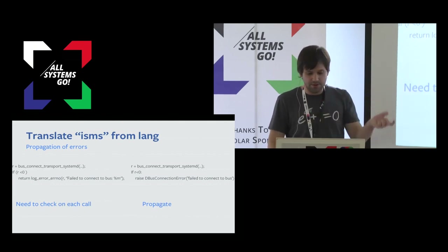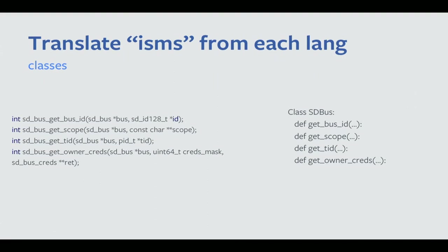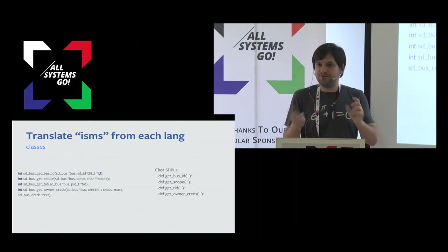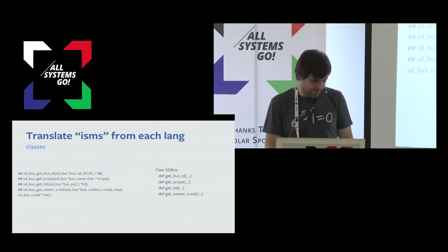You'll notice in my code that I raise a lot instead of checking, and I try-except a lot. The other thing is that systemd, from my point of view, is written in a way that looks like it's supposed to be object-oriented but isn't, because it's C. You usually pass a struct at the beginning of almost all calls. This really lends itself to translation into an object-oriented language — you create a class 'sdbus', drop the first argument name, and rename all the methods to call 'self'.